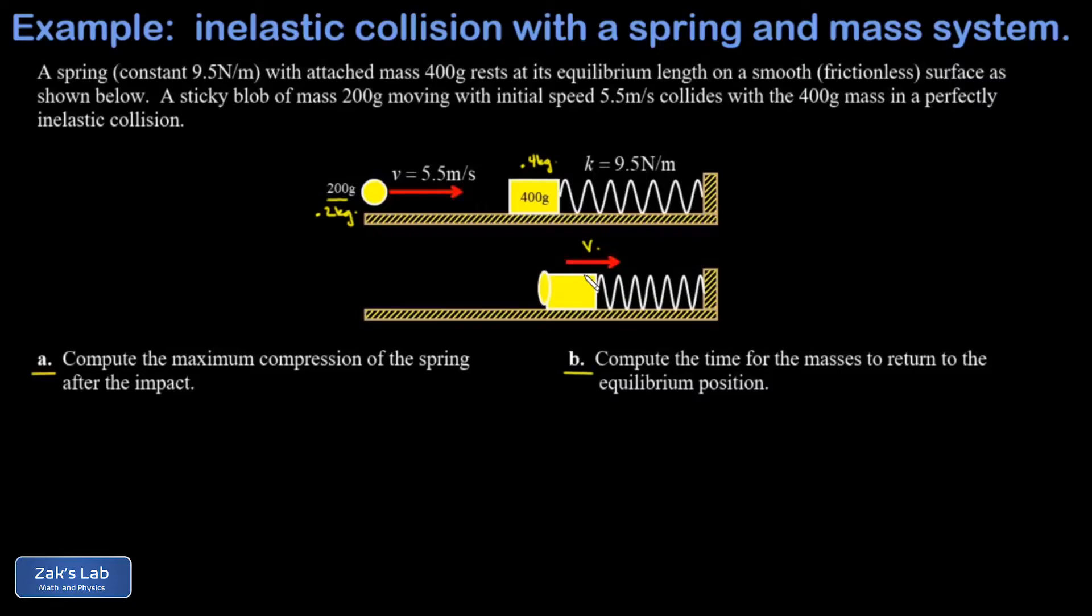We start by looking at momentum conservation during the collision, and that's going to give us the velocity of the combined masses right at the beginning of the oscillation part. So we say p initial equals p final for the collision. My initial momentum is all in that sticky blob, and that's just mass times velocity, or 0.2 times 5.5. My final momentum is in the motion of the combined masses.